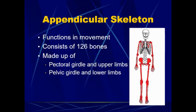The pectoral girdle would be the shoulders and the upper limbs. The pelvic girdle would be the hips and the lower limbs. Of the 126 bones, most of those we find in the hands and the feet.